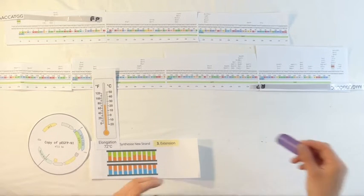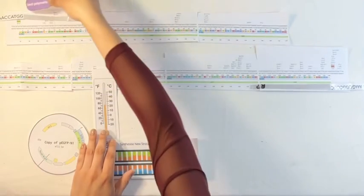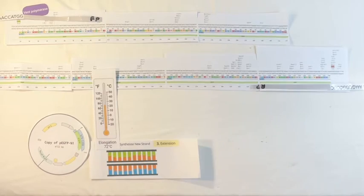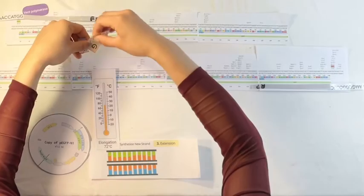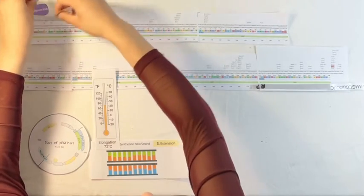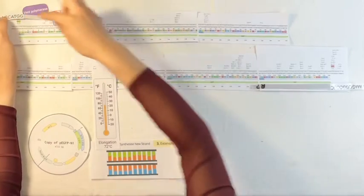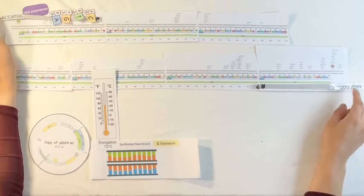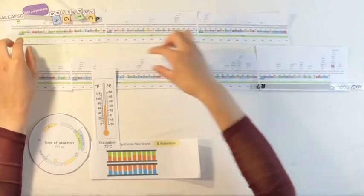During this process, this temperature is ideal for this enzyme known as vent polymerase to work. Vent polymerase is going to help assemble clones of this EGFP gene by running along between the sites of the primers, using DNTPs to build complementary segments.